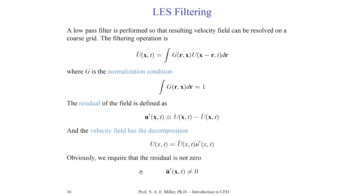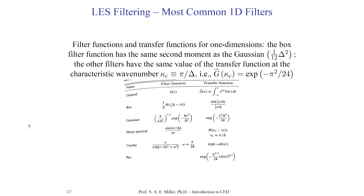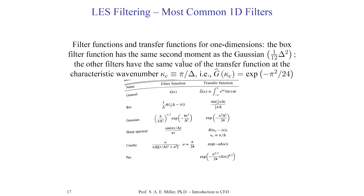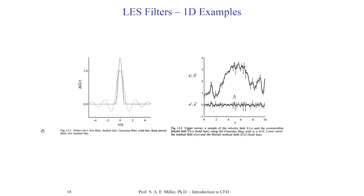There are many choices for the filter function G. This filter is designed as a low-pass filter to find low wave numbers representing the largest scales of turbulence. Famous filter choices include the box filter, Gaussian filter, sharp spectral filter, Cauchy filter, and Powell filter. We define a filter function G(r) and a corresponding transfer function G-hat. For example, the Gaussian filter would give the filtered result when substituted into the filtering integral.